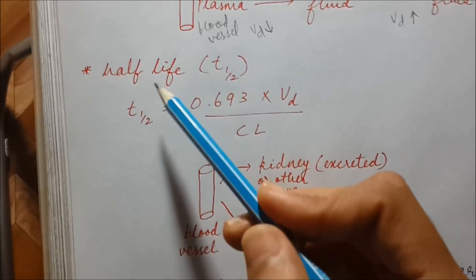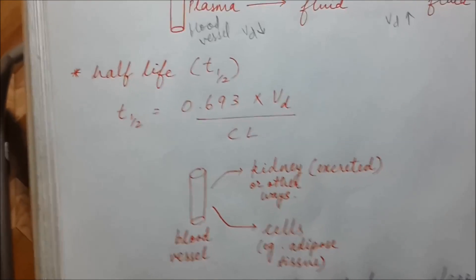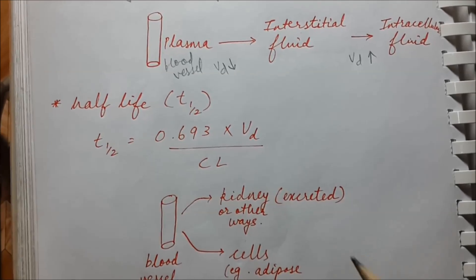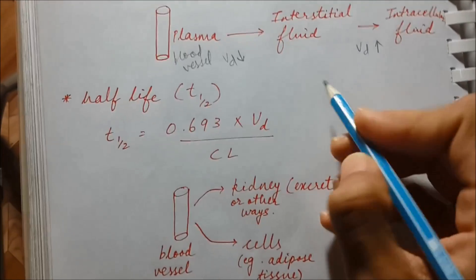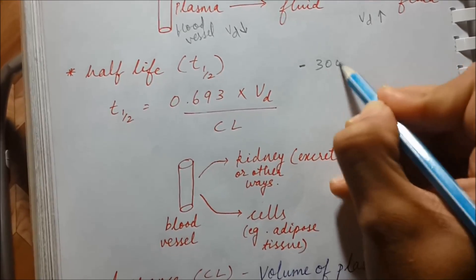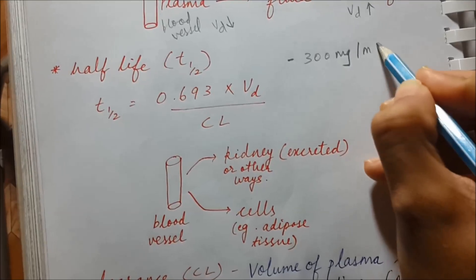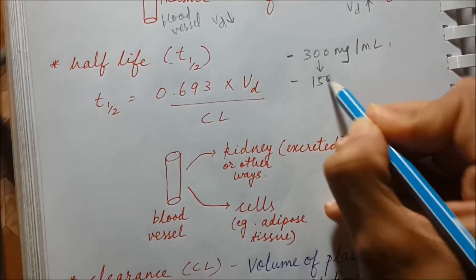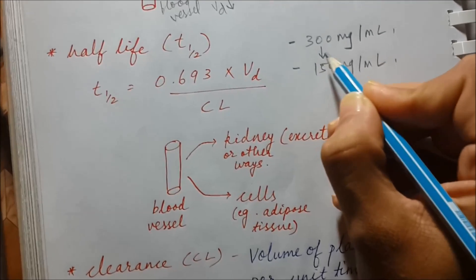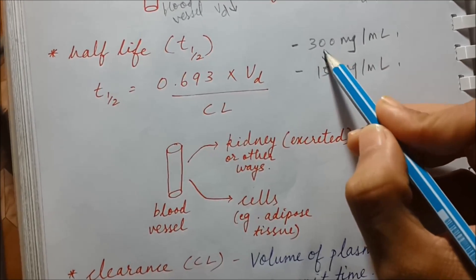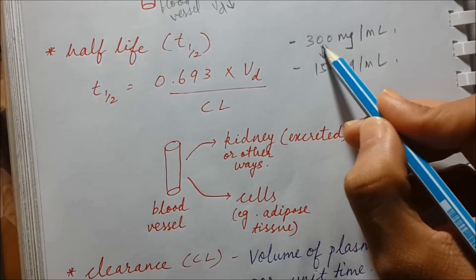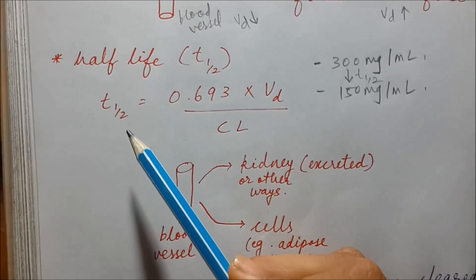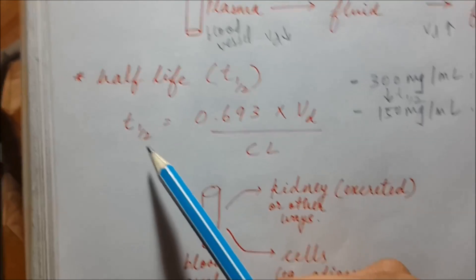The next thing is half-life. What is half-life? Half-life is the amount of time needed to decrease the plasma concentration to half of the initial concentration. Let's simplify it: if the initial concentration of the drug is 300 mg/mL, how much time does it take to reach from 300 mg/mL to 150 mg/mL? This is called half-life — the time required for the plasma concentration of the drug to become half of its initial concentration.